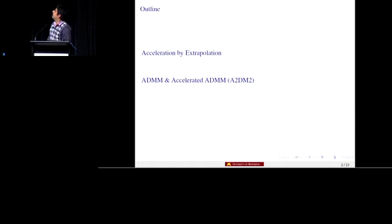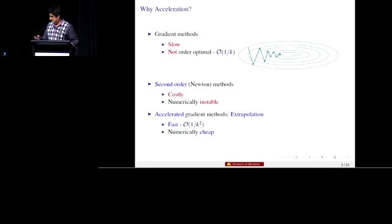The outline: I will talk first about the acceleration by extrapolation, which is a very important idea in optimization literature, and then I will talk about how we can extend this idea to ADMM and get an accelerated ADMM, which we call A2DM2. I will try to talk about how we can apply it to some of the problems that arise in machine learning.